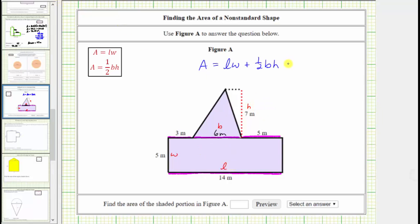The area of the polygon is equal to the area of the rectangle, which is 14 meters times 5 meters, plus the area of the triangle, which is 1 half times the base, which is 6 meters, times the height, which is 7 meters.